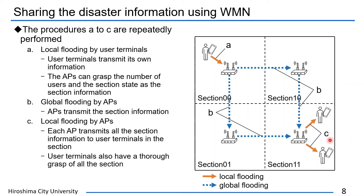Then, APs can grasp the number of users and the section state as the section information. Second, APs transmit messages by global flooding. APs transmit the section information to all APs. APs which receive the section information from the other APs have a thorough grasp of the disaster situation and the number of users in all sections through the wireless mesh network. Finally, each AP transmits all the section information obtained from the other APs to user terminals in the same section by local flooding. Therefore, user terminals select the evacuation route based on the section information.